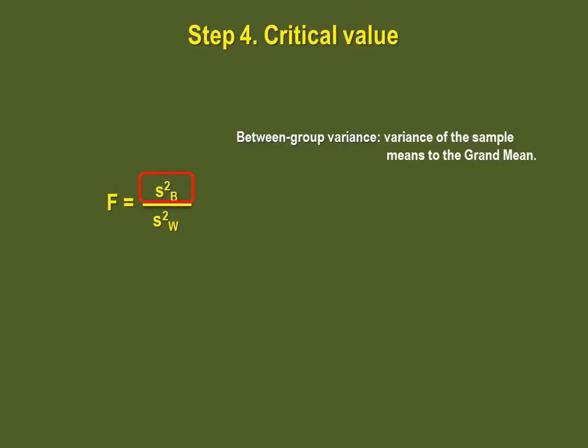Let's start with the degree of freedom of the numerator. Remember that this is the variance of the sample means to the grand mean. So we must first ask ourselves, how many samples do we have? The degree of freedom for the numerator is the number of samples minus 1, so 3 minus 1 is 2.